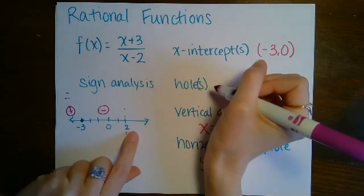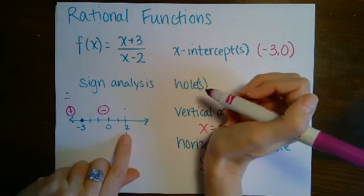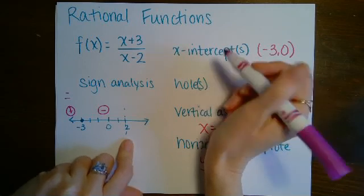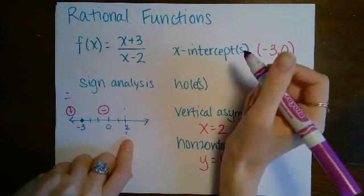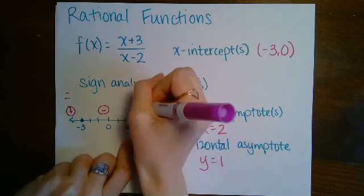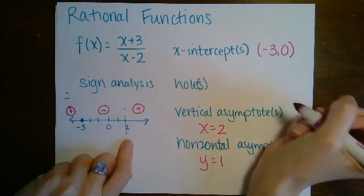The last thing we do is pick a point to the right of 2. Again, any point to the right of 2. Let's pick 10. 10 plus 3 will be positive, 10 minus 2 will be positive, and a positive divided by a positive is positive.